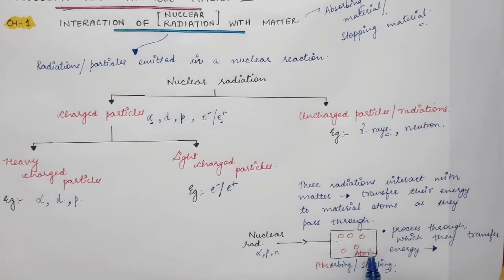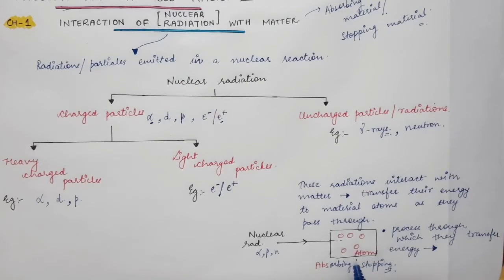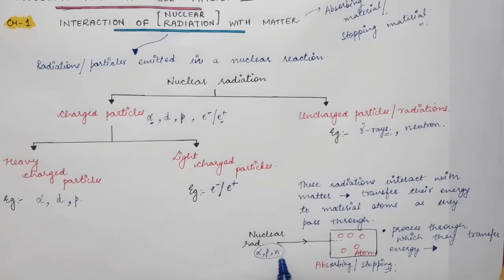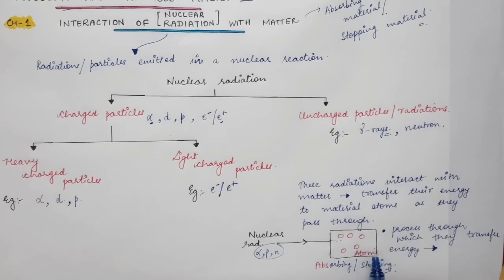This concept is actually used in detectors. A detector is made up of a special material or medium. When nuclear radiations enter the medium of the detector, they interact with the atoms of the medium and lose their energy, transferring it to the atoms or molecules. This energy loss can be detected by the electronic system attached to the detector.